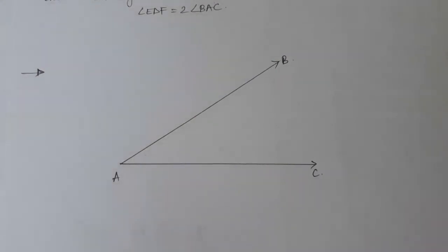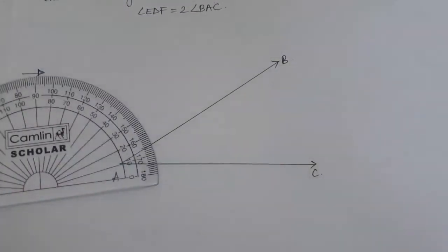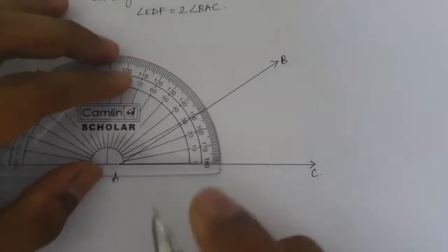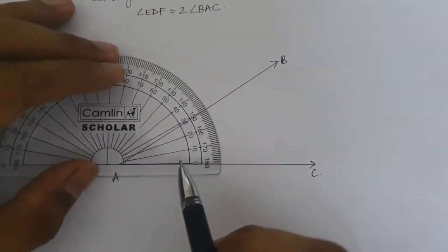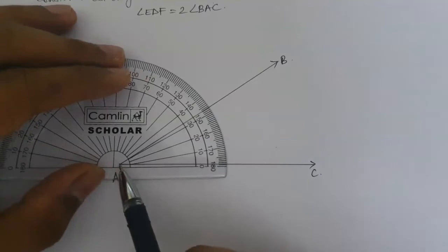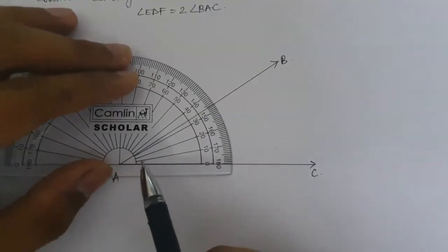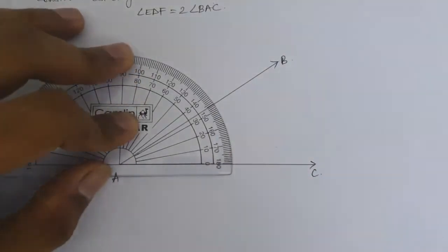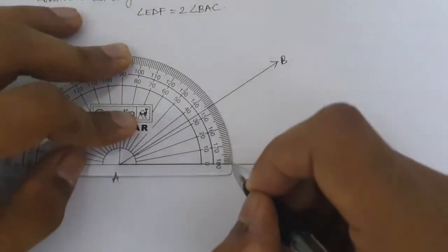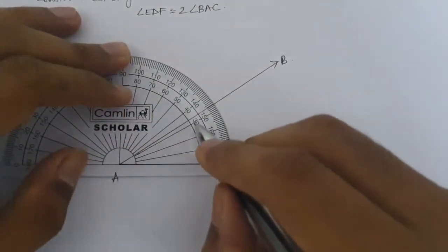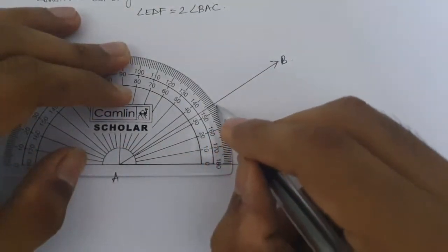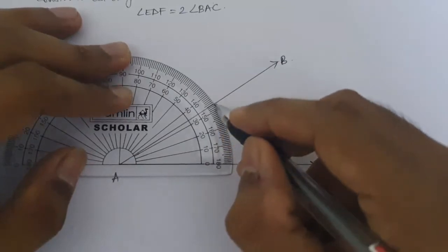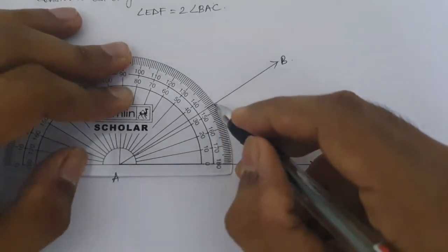So for that we will measure this angle using a protractor. So we make sure the line on the protractor and our edge matches and the point A matches with the point on the protractor. So by doing this we measure that we see that the angle is 35 or 34 degrees.